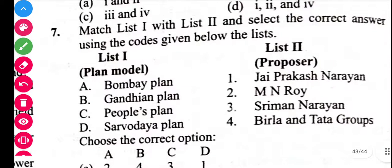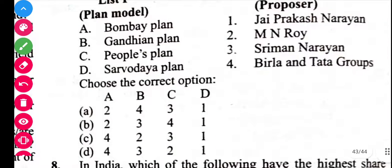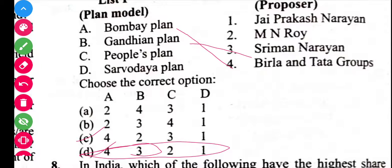Next question: match List 1 and List 2 for various plan models and their proposers. The Bombay Plan was proposed by the Birla and Tata group. The Gandhian Plan was proposed by Shriman Narayan. The People's Plan was proposed by M.N. Roy. The Sarvodaya Plan was proposed by Jayaprakash Narayan. The correct matching is 4, 3, 2, 1, so the answer is D.